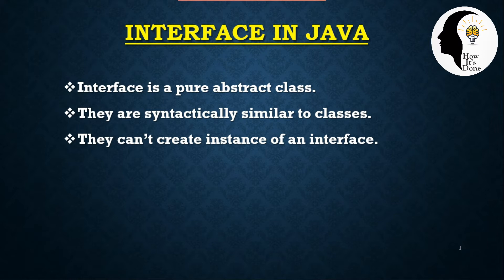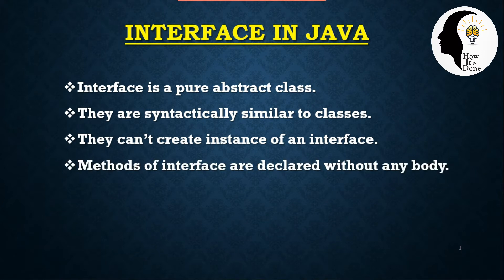We cannot create an instance of an interface. We can create an object in a class, but in the interface, object means instance — and that is not allowed. The methods of the interface are declared without any body. The interface is a pure abstract class.